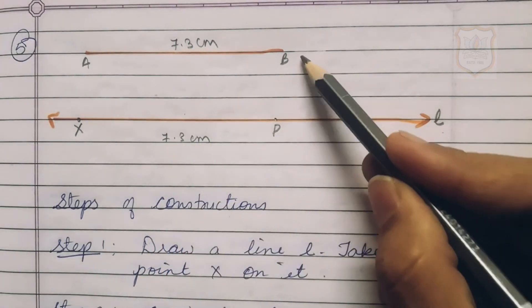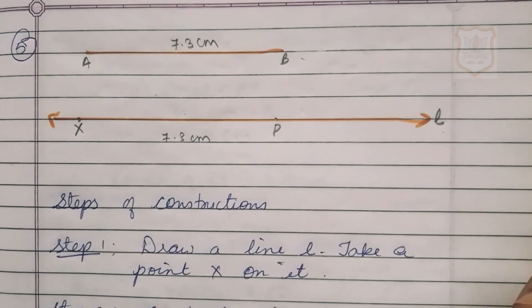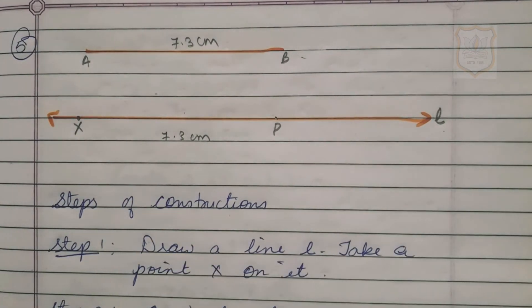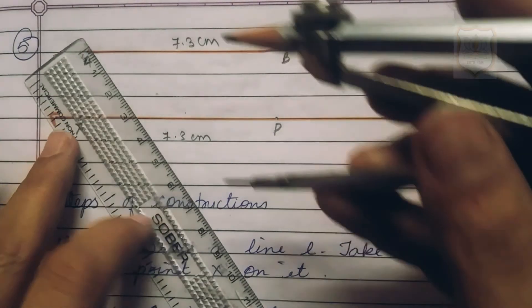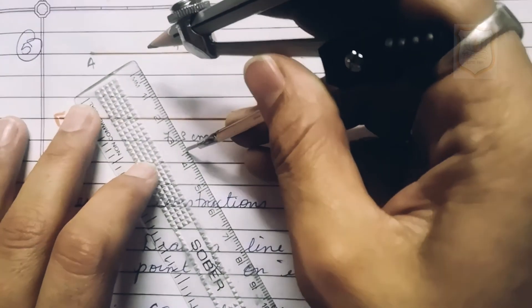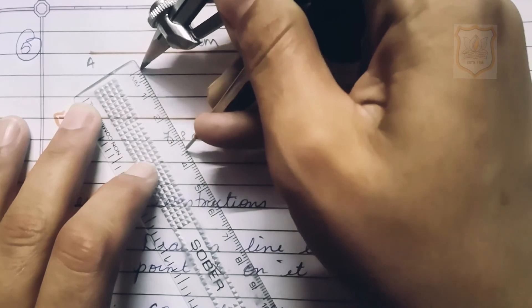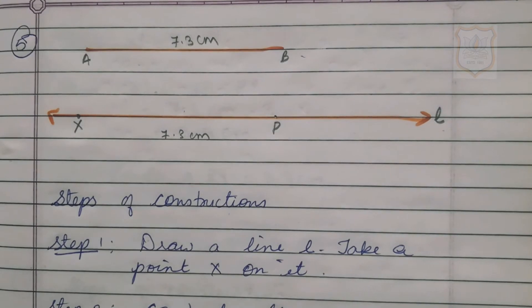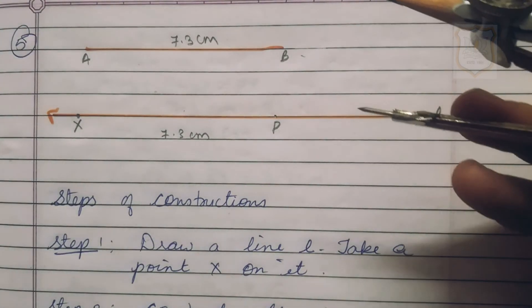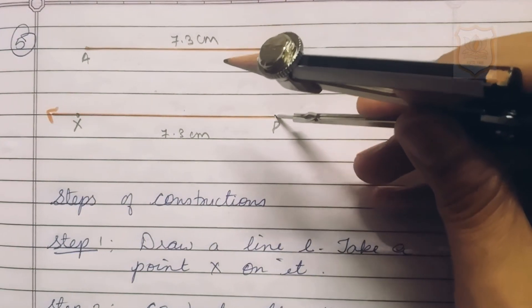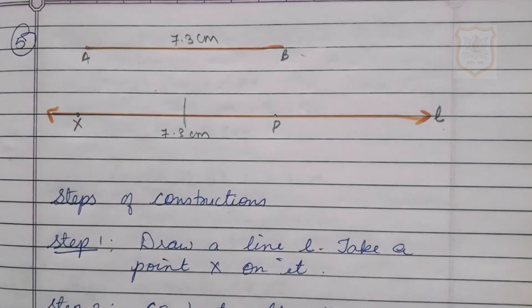Step 3: Keep the compass distance at 3.4 centimeter. Place the pointer at 3.4 and the pencil tip at 0 to open the compass. Step 4: Place the pointer of the compass at point P and draw an arc to cut the line L, naming that point as Y.